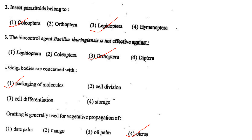Next one: Insect parasitoids belong to option 1, Coleoptera; option 2, Orthoptera; option 3, Lepidoptera; option 4, Hymenoptera. Answer is option 1: Coleoptera as well as Lepidoptera.